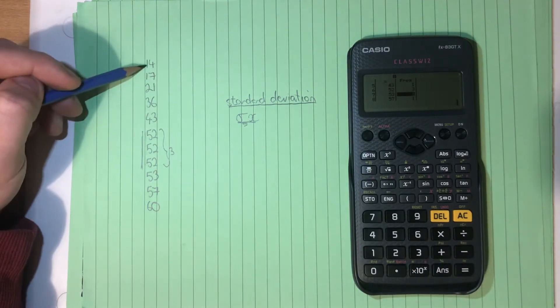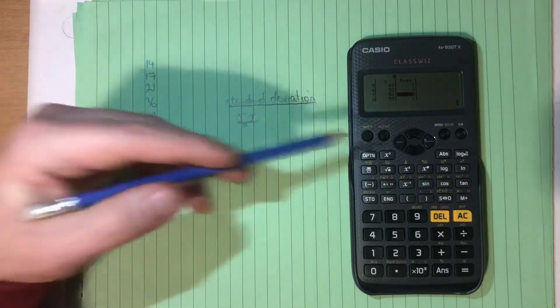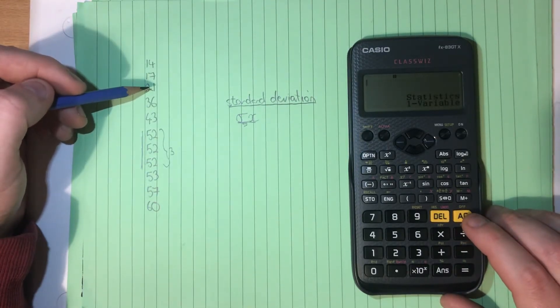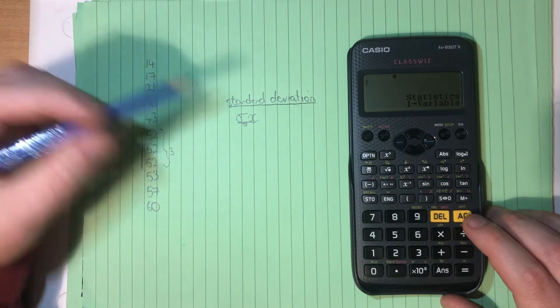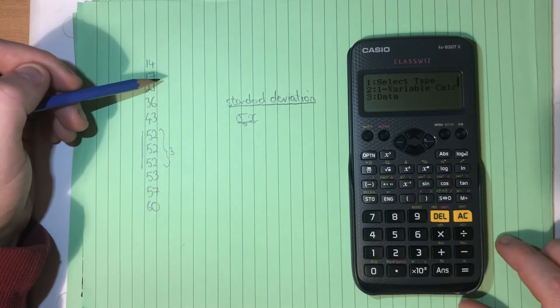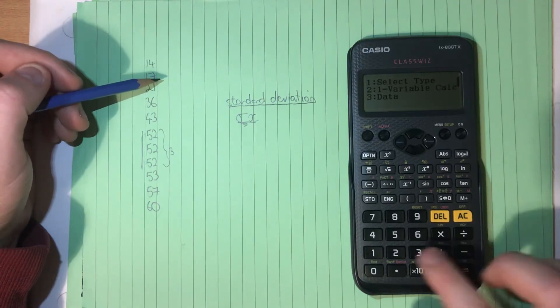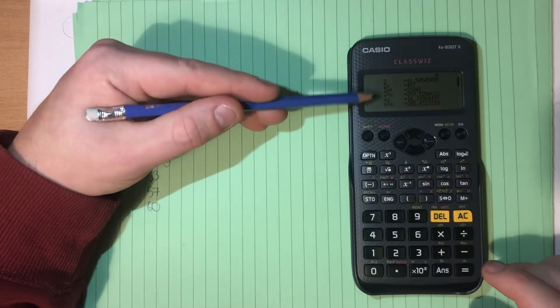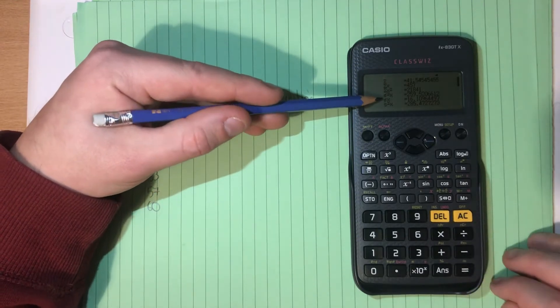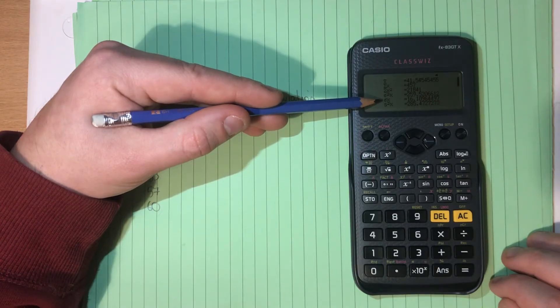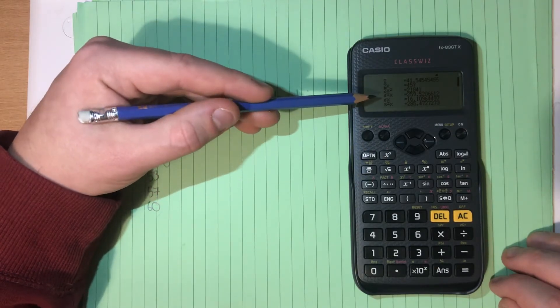So we now have this information inside the calculator's mind. As normal, we go AC. And we now go into Options. And we want number 2. And that gives us a list of information here, which is kind of nice. And the thing we want is Sigma X here. So our standard deviation is 16.11.